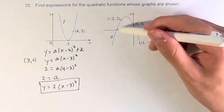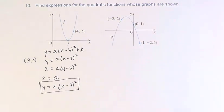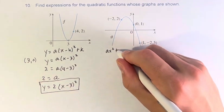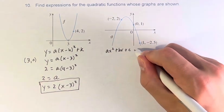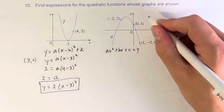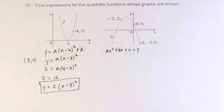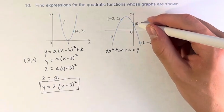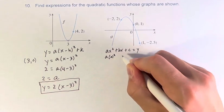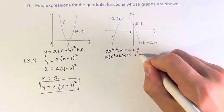With this graph, we don't have a vertex given, so we're going to use standard form: ax squared plus bx plus c equals y. The easiest one to plug in is this y-intercept. x is equal to 0, y is equal to 1. So this is a times 0 squared plus b times 0 plus c equals 1.